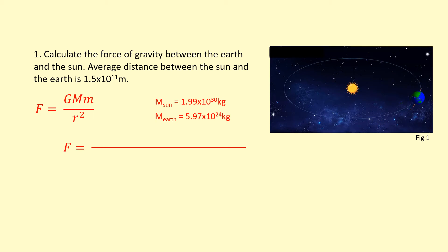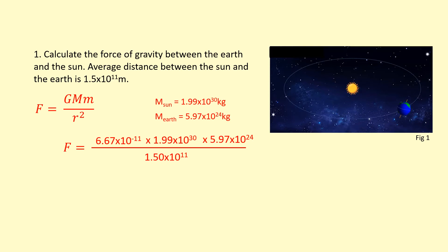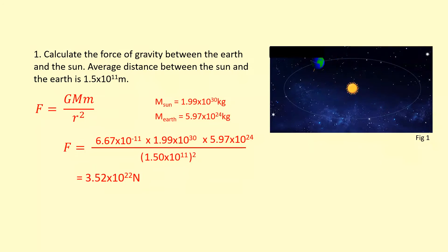So I'm going to put the values into the equation. The gravitational constant G is 6.67 × 10⁻¹¹, which you can find in your data sheet. Then I multiply by the mass of the Earth and the mass of the Sun. Then I need the distance between the centers, which is the average distance 1.5 × 10¹¹, but don't forget to square this — you need to square the distance for the force — and that gives us the force.